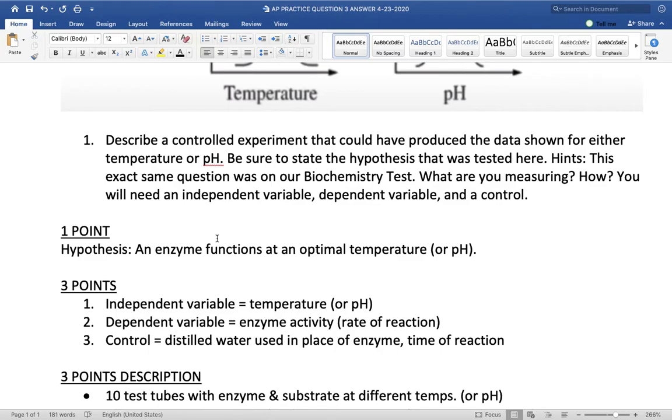Maybe 0 degrees Celsius, 10 degrees Celsius, 20, 30, 40, 50, 60, 70 degrees Celsius. Or pH. pH of 1, 3, 5, 7, 9, 11, 13. So, each test tube has a different environment.